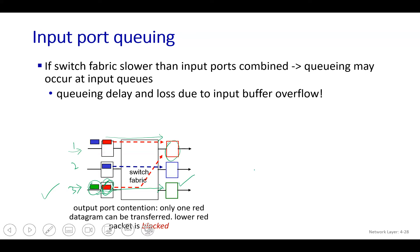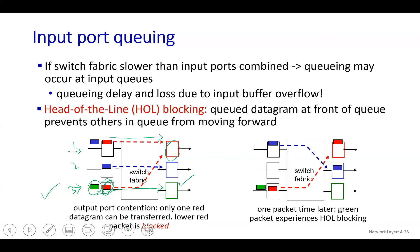This is known as head-of-line (HOL) blocking — the packet at the front of the queue blocks packets behind it from being forwarded even though their output port is free.